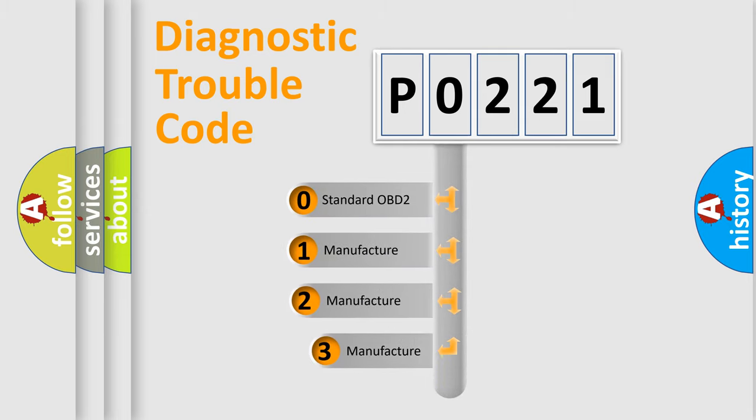If the second character is expressed as zero, it is a standardized error. In the case of numbers 1, 2, or 3, it is a more precise expression of the car-specific error.